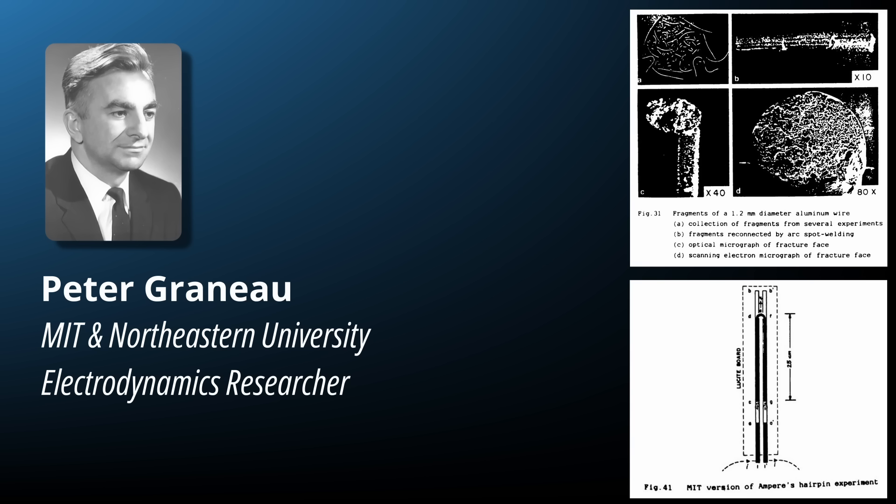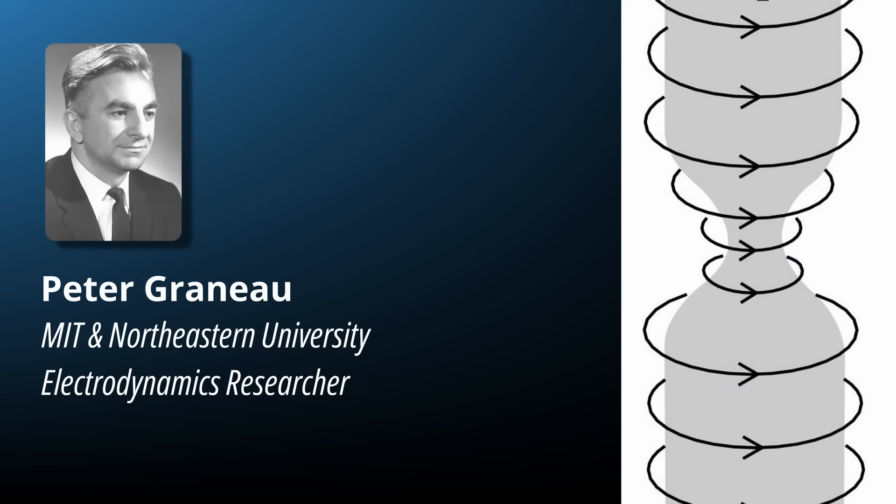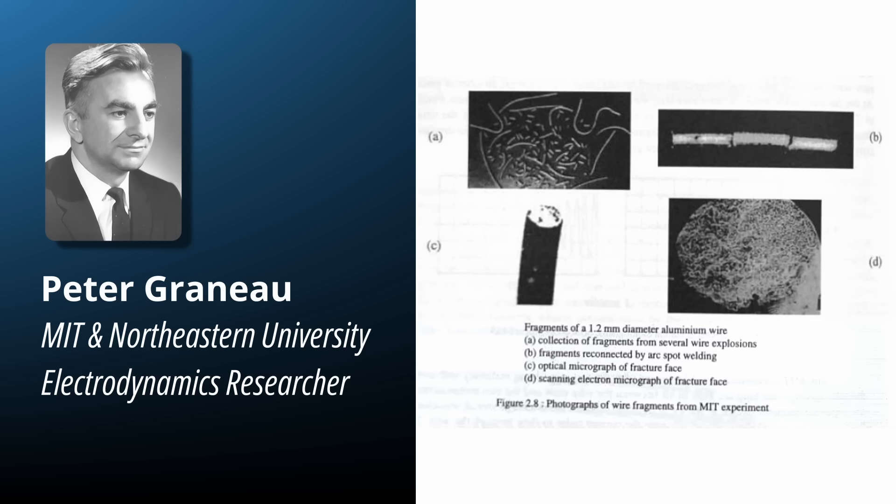He ran high current experiments sending powerful pulses through thin wires. To his surprise, he measured forces acting along the length of the conductor. Much stronger than Maxwell's equations predicted, and entirely in line with what Ampère had described. According to standard electromagnetic theory, two main effects should dominate. The magnetic pinch force squeezing the wire radially and resistive heating gradually vaporising it from within. Yet, in Greno's tests, the wires didn't simply pinch and melt. They fragmented violently along their length, as though being pulled apart head to tail. When he measured these forces directly, they matched the predictions of Ampère's original law, including the longitudinal repulsion between current elements, completely absent from the Maxwell-Lorentz formulation.